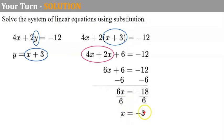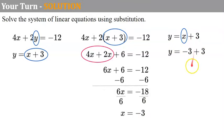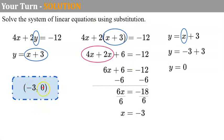Now we take x equals negative 3 and go back to the simpler equation, replacing x with negative 3. Negative 3 plus 3 is zero. So our ordered pair is negative 3, zero in parentheses separated by a comma. Let's check: 4 times negative 3 is negative 12, 2 times zero is zero, negative 12 plus zero is negative 12. And for the second equation, negative 3 plus 3 is zero. It checks.